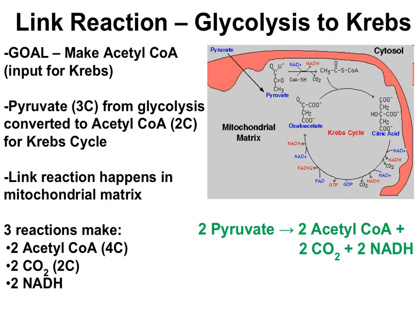Let's start with the link reaction. The link reaction gets its name because it links glycolysis to the Krebs cycle. The Krebs cycle requires an input of a chemical called acetyl-CoA, which has a structure with two carbons. The goal of the three reactions in the link reaction is to make acetyl-CoA, and along the way two NADHs are also made.